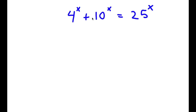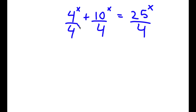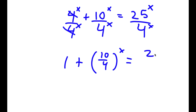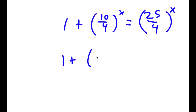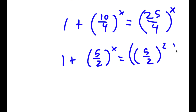So in this problem, I have 4 to the power of x plus 10 to the power of x is equal to 25 to the power of x. So I'm going to first start by dividing all my terms by 4 to the power of x. So now 4 to the power of x cancels out, and I have 1 plus 10 over 4 to the power of x is equal to 25 over 4 to the power of x. Now 10 over 4 is the same thing as 5 over 2, and 25 over 4 is the same thing as 5 over 2 squared, all to the power of x.